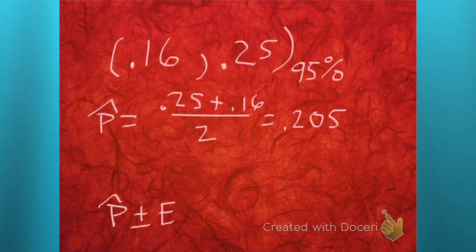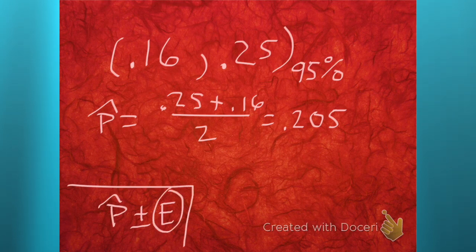How do we estimate the error? How are we going to find that now that we have the middle value? Well, there's two different ways I can see. I can take that value and subtract off one of the endpoints — you totally could! And then that's going to get you the distance to the center, which is your error.